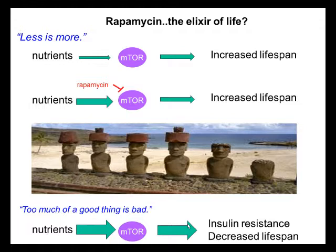Rapamycin is currently being used as an immunosuppressant and anti-cancer drug. Lately, rapamycin has gained attention as a possible elixir of life since it was shown to extend the lifespan of mice. Before this discovery, caloric restriction was the only effective way to prolong lifespan in animals.